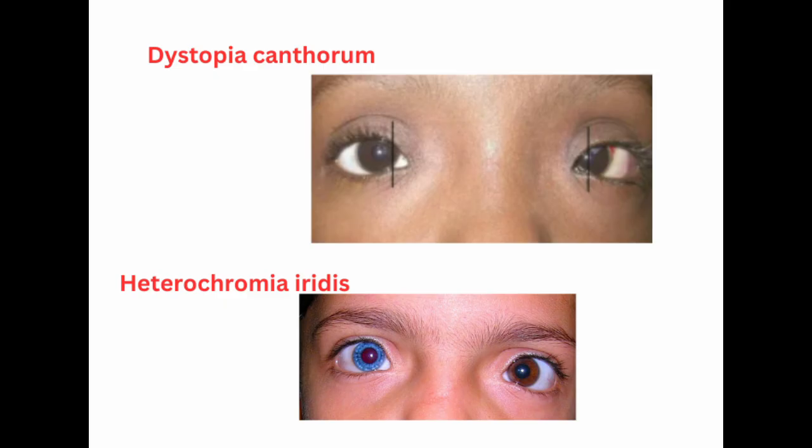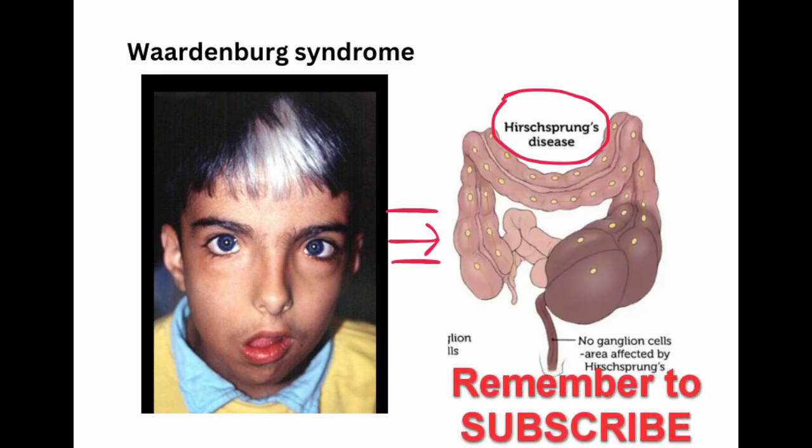Here you can see dystopia canthorum: the vertical line drawn through the medial puncta normally will not intersect the cornea, but in this case it will intersect. Also heterochromia iridis, where each eye has a different color. Remember that Waardenburg syndrome, especially type 4, is associated with Hirschsprung disease or congenital megacolon — usually asked as an MCQ.